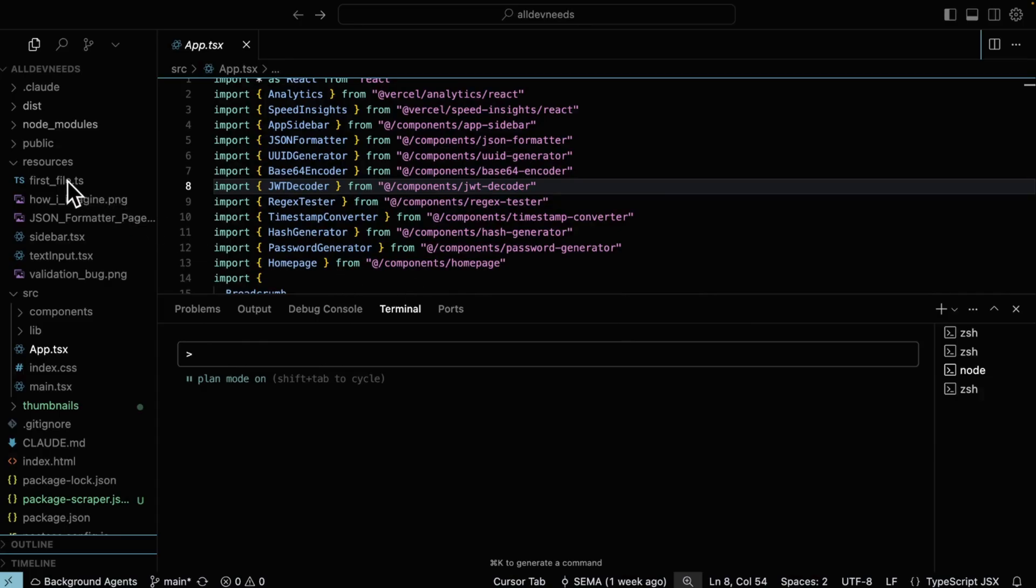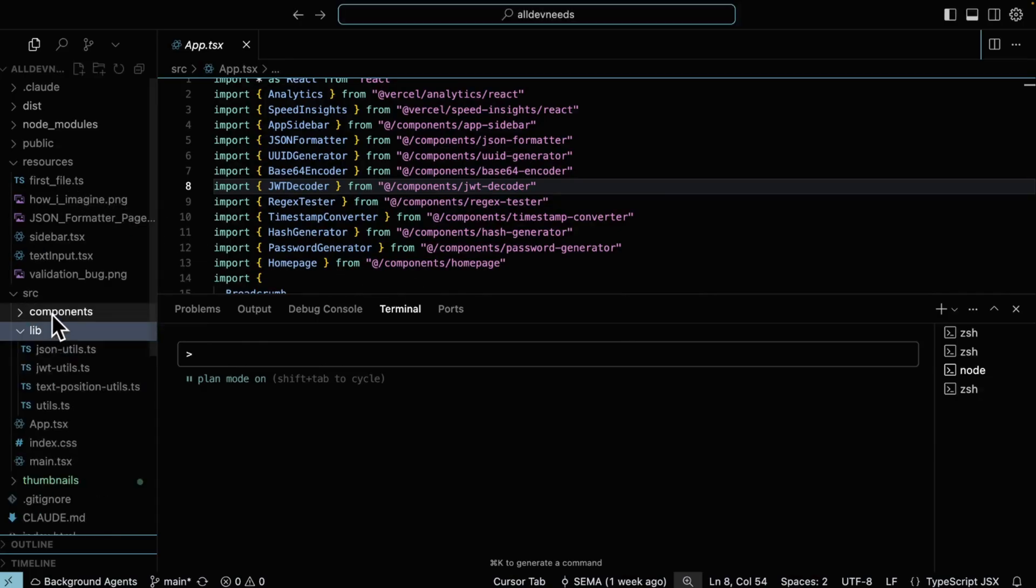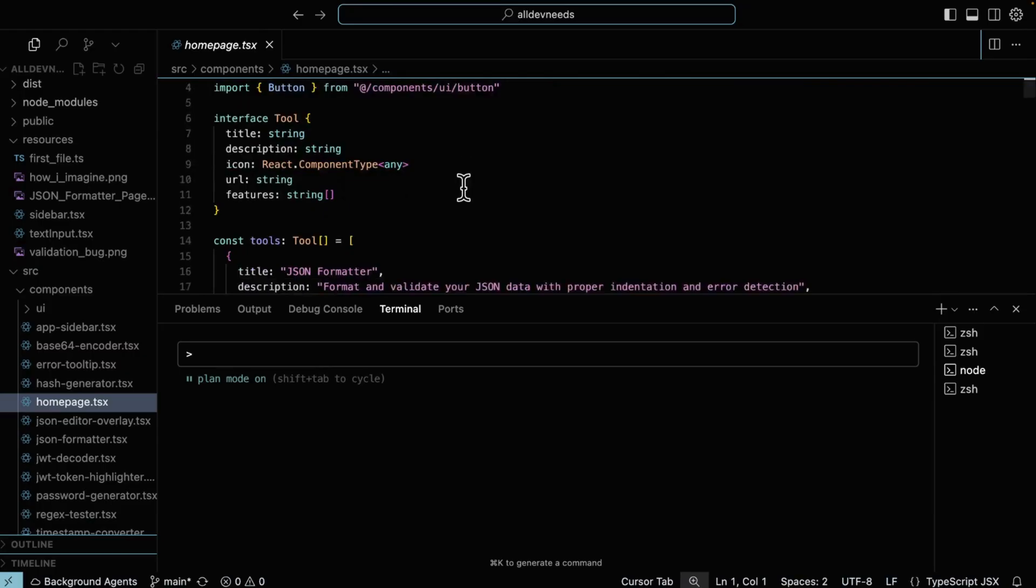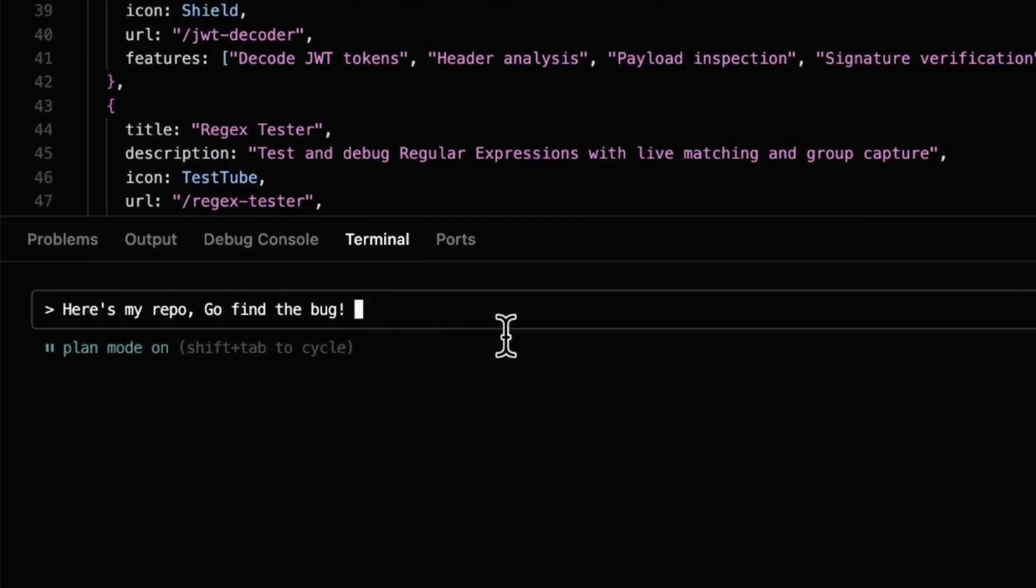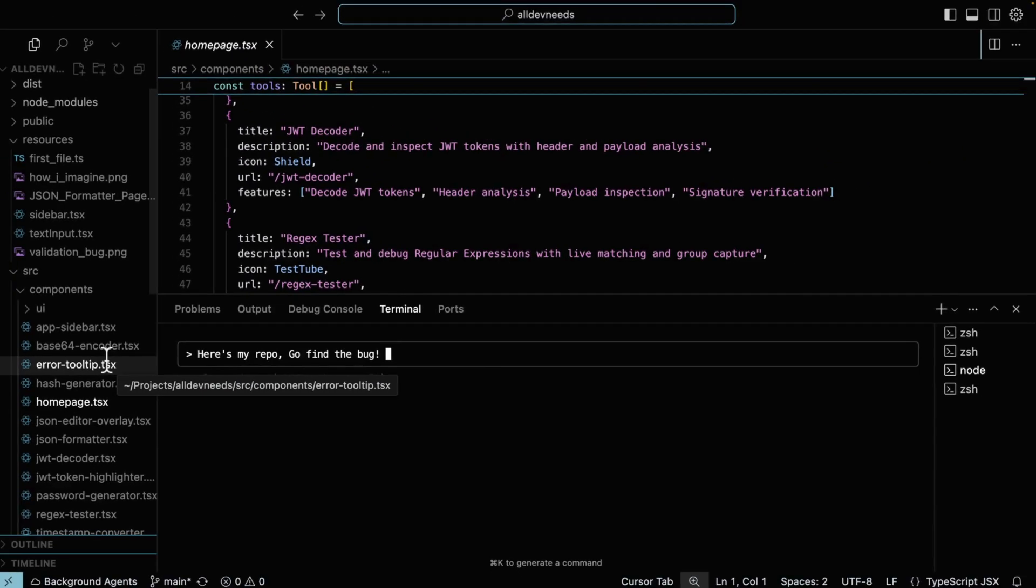Tip number two is all about precision. Claude can understand large code bases, but if you let it explore freely, you are burning tokens fast. Instead of saying, here's my whole repo, go find the bug, say something like, check the verify user function inside auth.js, that's where the issue probably is. Being specific cuts down token usage, speeds up the response, and gives you more focused answer. Don't let Claude Code explore, guide it instead.